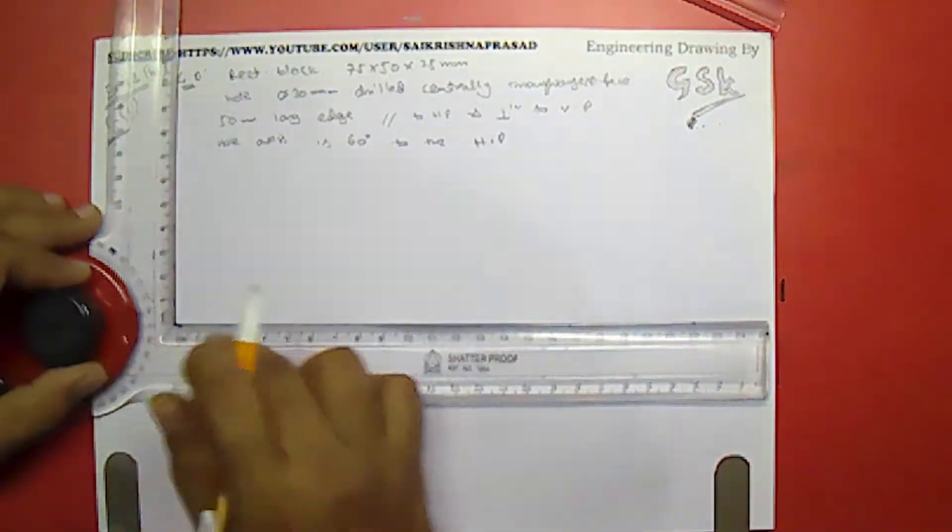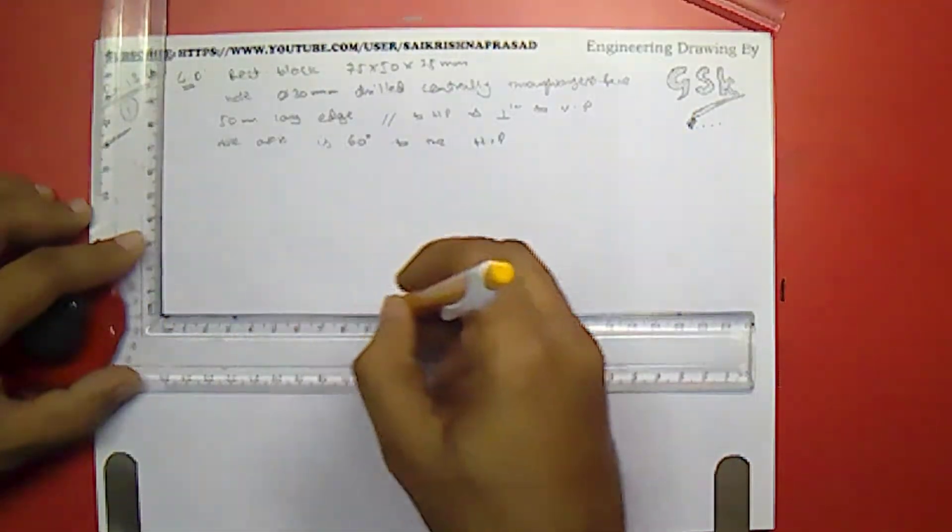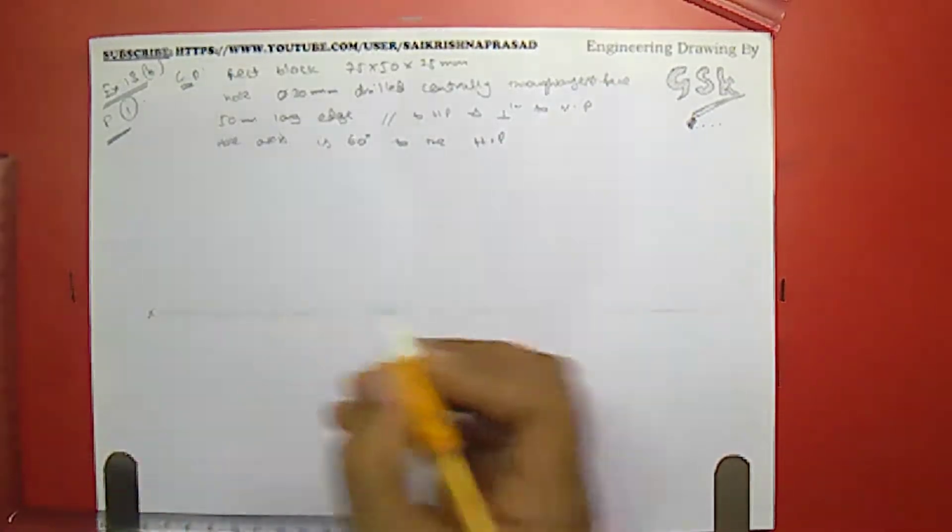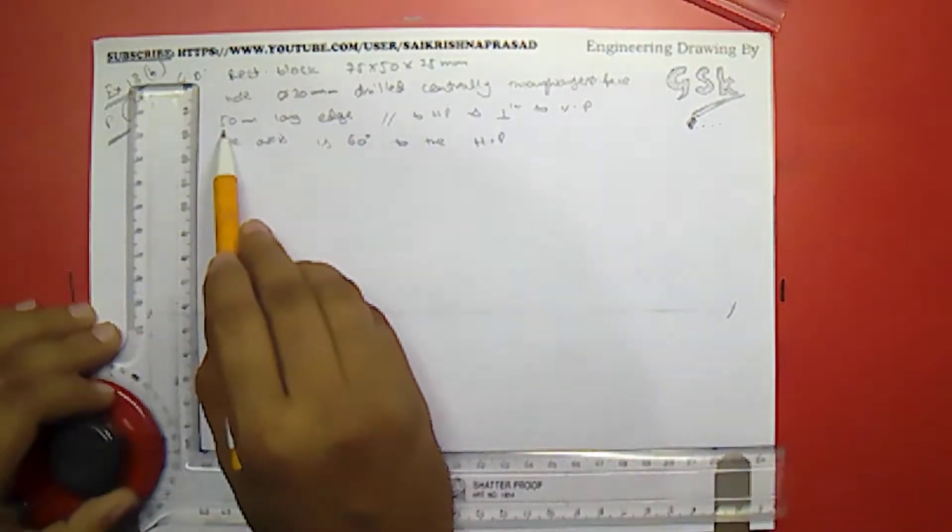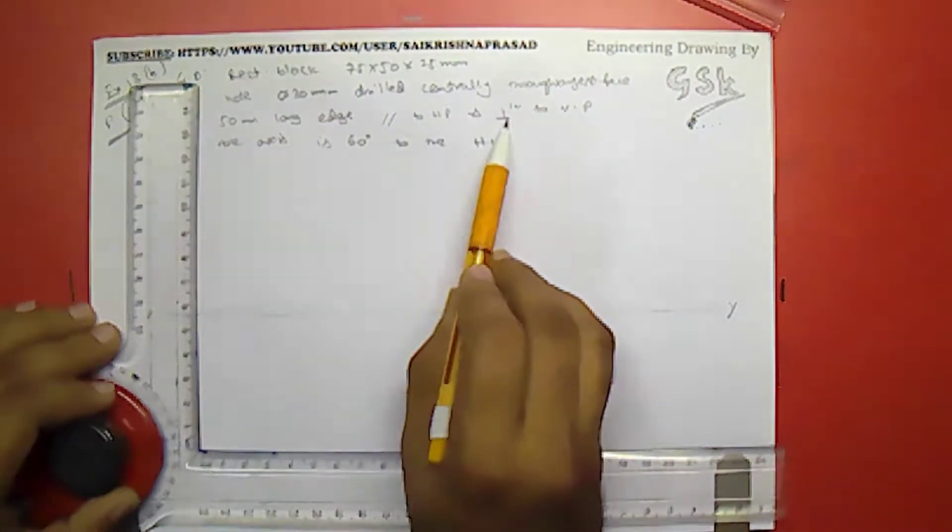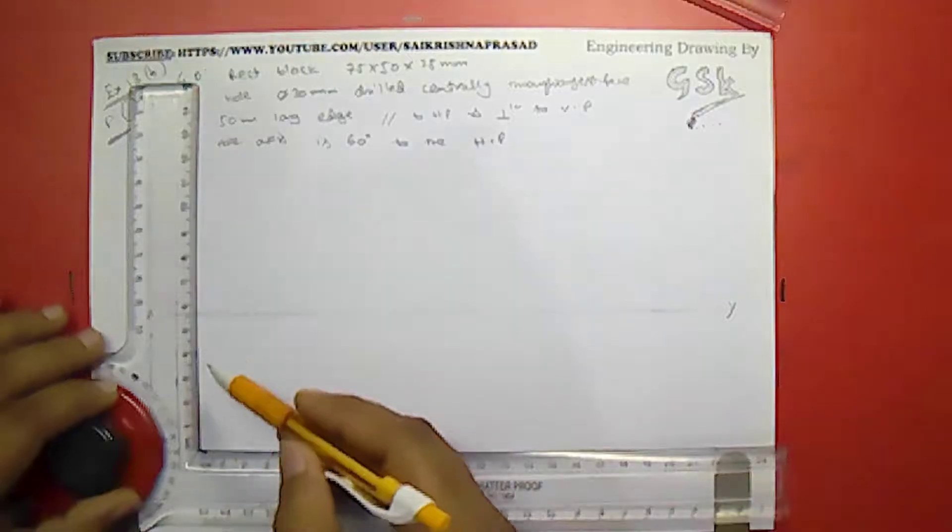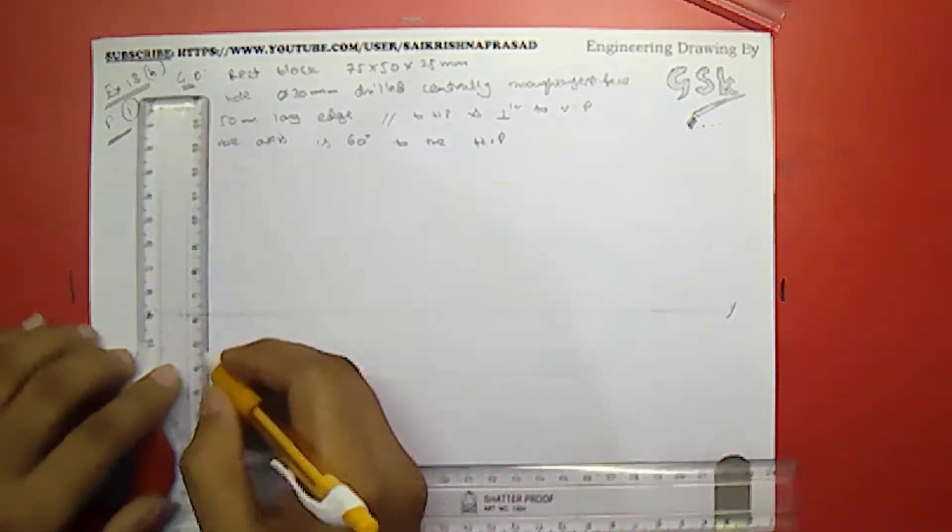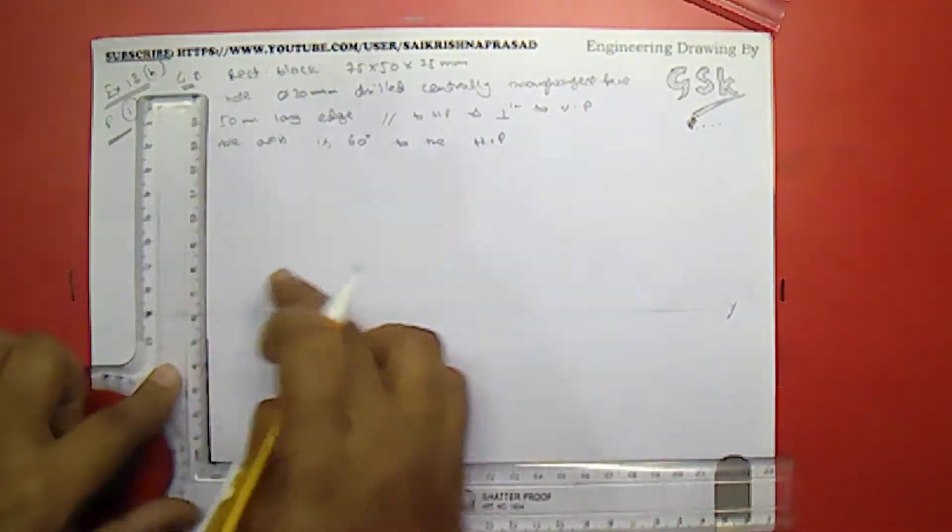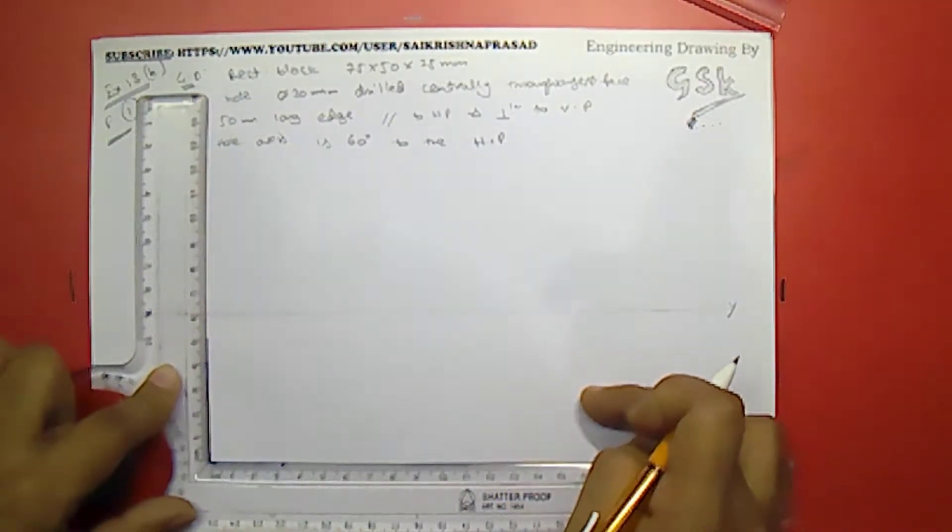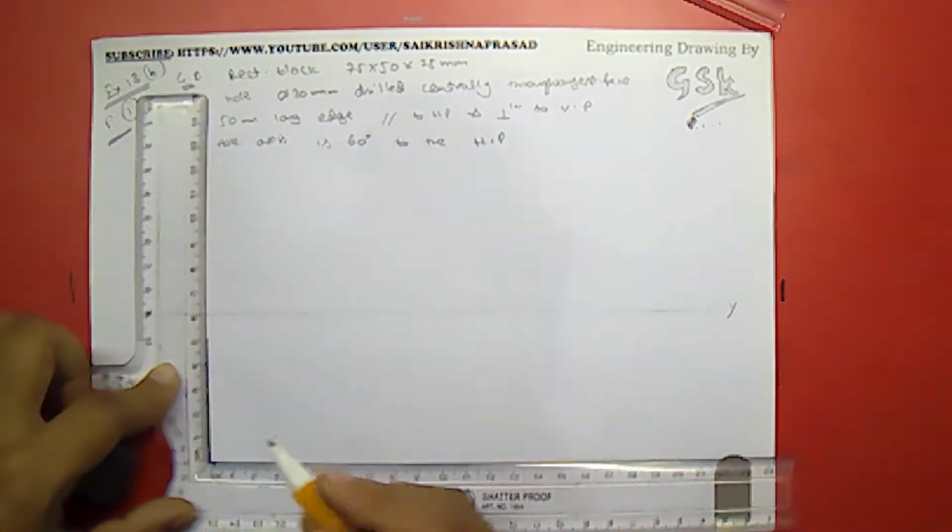I will take the reference line that is XY over here. Now, given in the question, the 50mm long edge is parallel to HP and perpendicular to VP. So let us consider first this one perpendicular to HP means this is the condition we have to draw this line over here. 50mm long line, it is perpendicular to VP. Let us consider this as VP and this as HP. So this is perpendicular to VP and now as we consider the height this is parallel to HP.